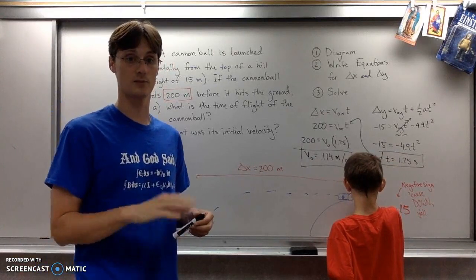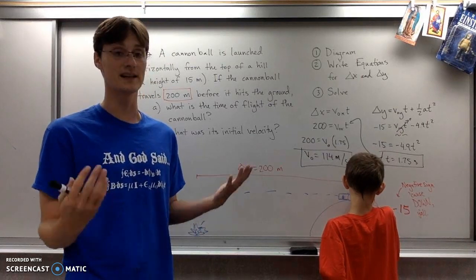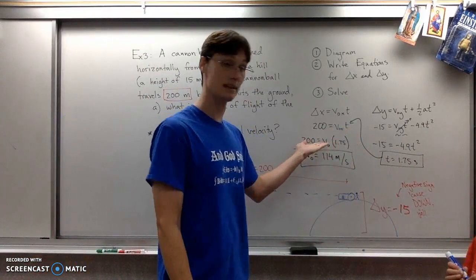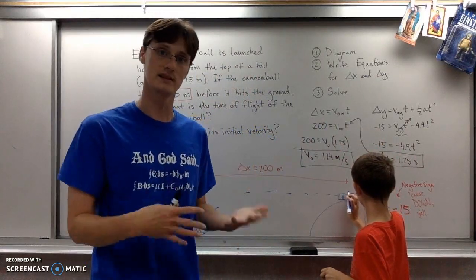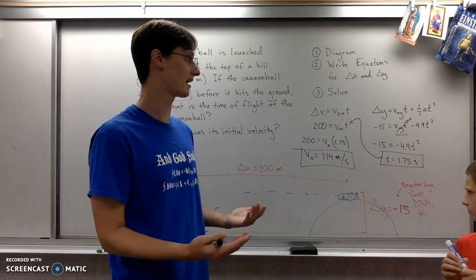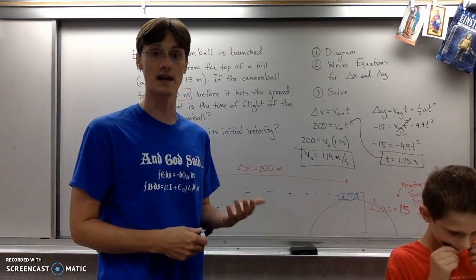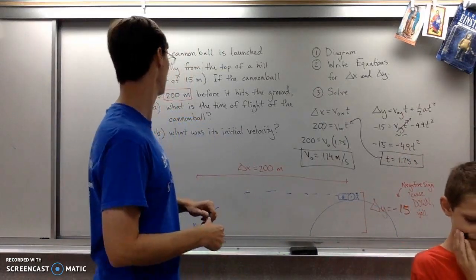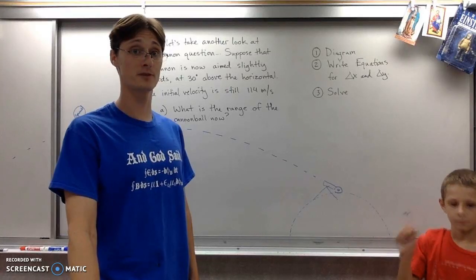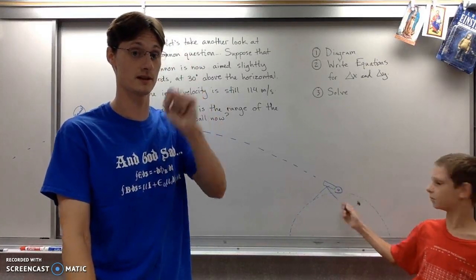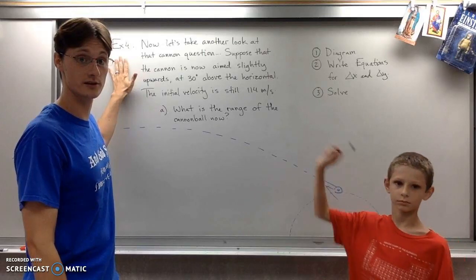That's everything for example 3. Not every two-dimensional kinematics problem will go exactly like this. Sometimes you'll be given initial velocity and solve for time, other times the opposite. This is one form of a two-dimensional problem. Let's check out example 4, which will have us do slightly different things. Turn to the correct page.